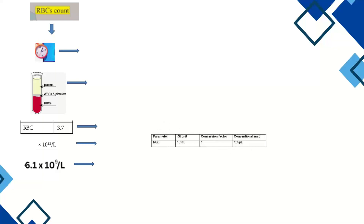Because the sponsor sends laboratory samples to multiple diagnostic centers, different units can appear for the same parameter. A conversion factor is used to convert all values into SI format. The short name of the lab test is mapped to LBTESTCD, the full name to LBTEST. The date and time of collection is mapped to LBDTC (date-time character version), and the specimen type — plasma or blood — is mapped to LBSPEC.